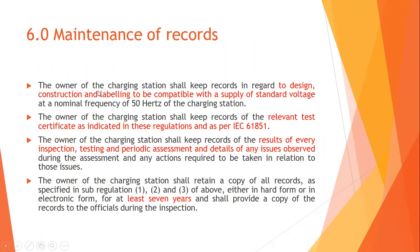Rule 6 covers maintenance of records. The owner of the charging station shall keep records regarding design, construction, and labeling compatible with the supply standard voltage at normal frequency of 50 Hz. Records shall include the test certificate as per IEC 61851, and results of every inspection, testing, periodic assessment, and details of any issues observed along with actions required. All records shall be retained in hard or electronic form for at least seven years and a copy provided to officials on duty inspection.